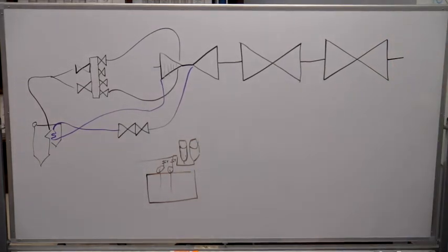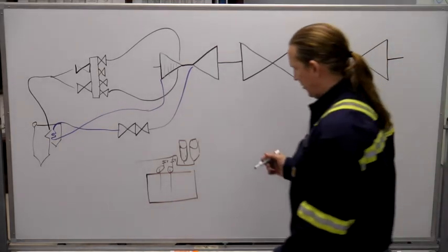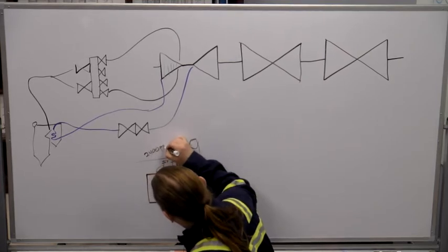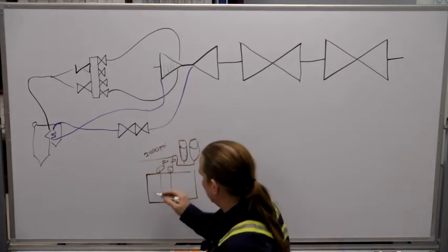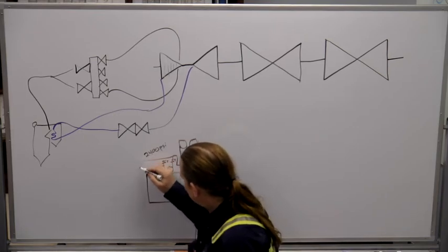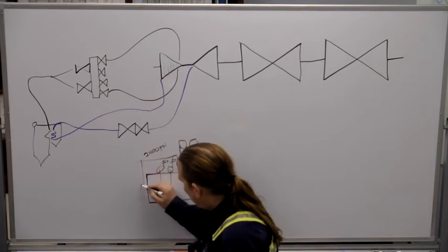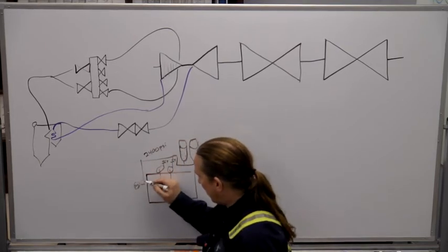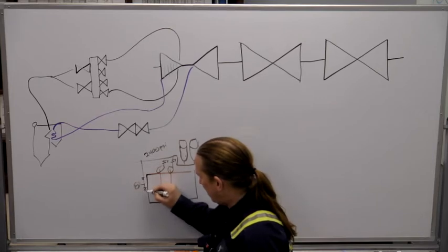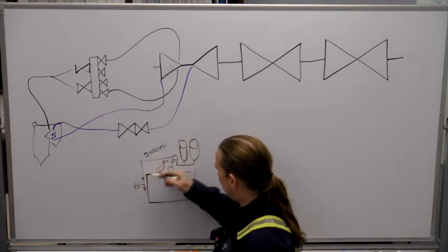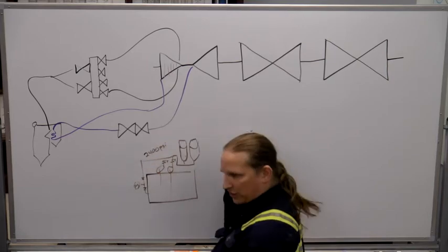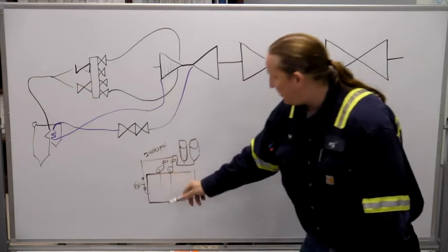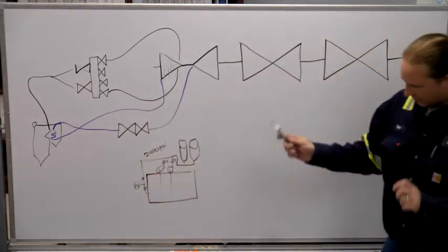The system operates at 2,400 pounds. There's a pressure switch, and there's a weekly test where we isolate the accumulator and vent off the pressure. When it drops below 1,700 pounds, it starts the standby pump — test good. Then we align the switch back up and swap pumps every week.